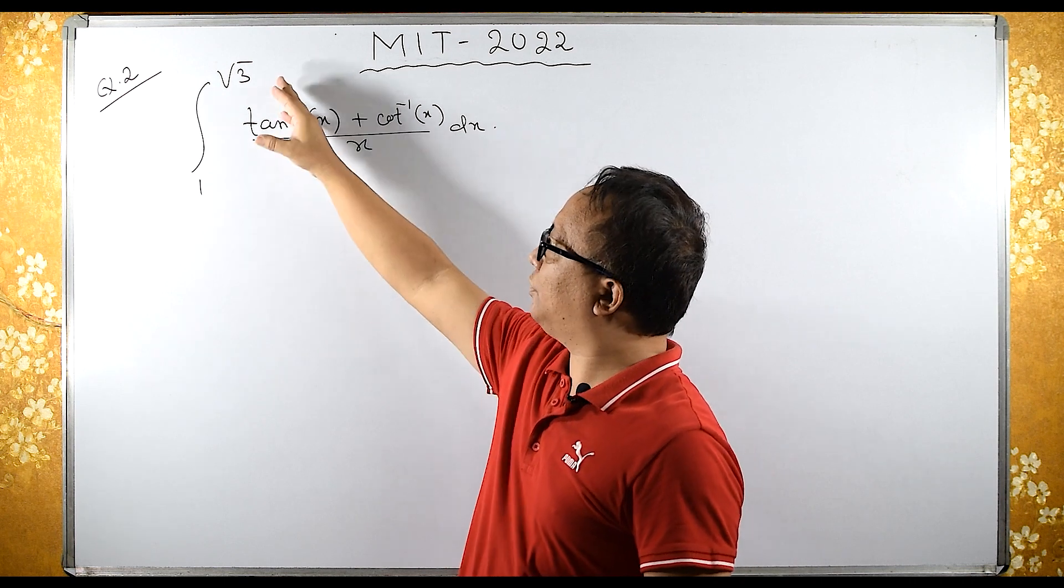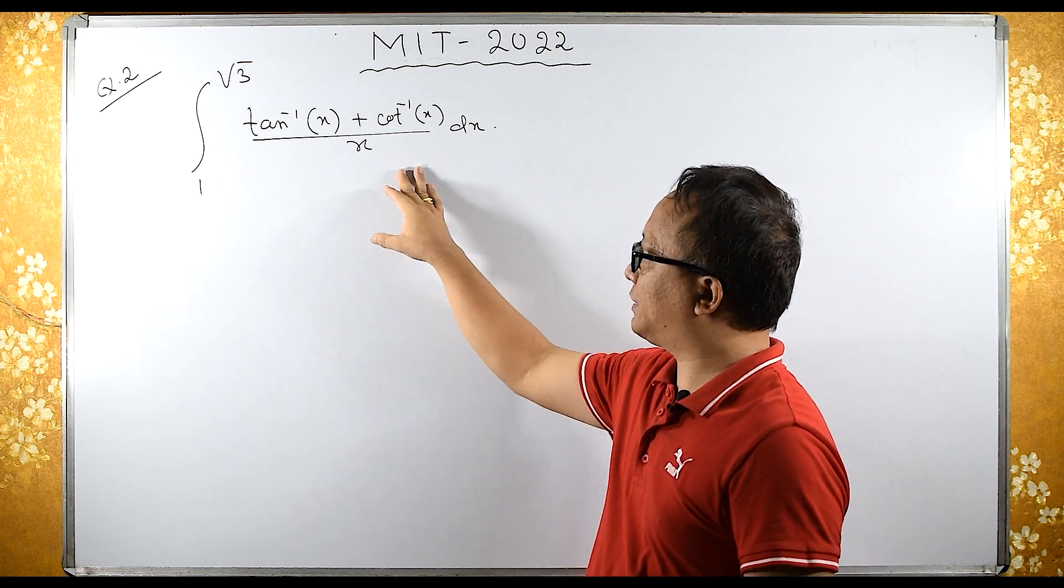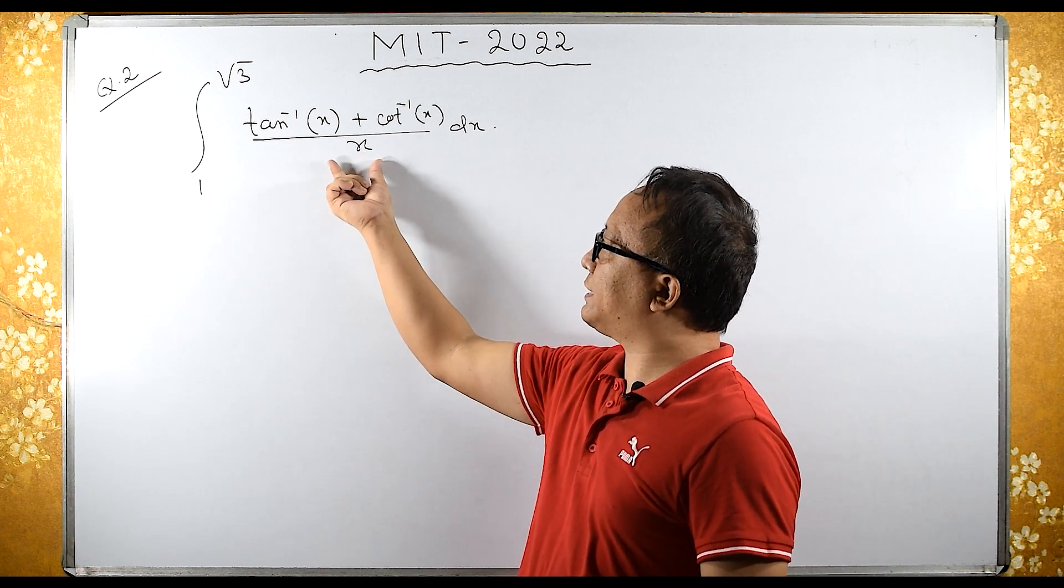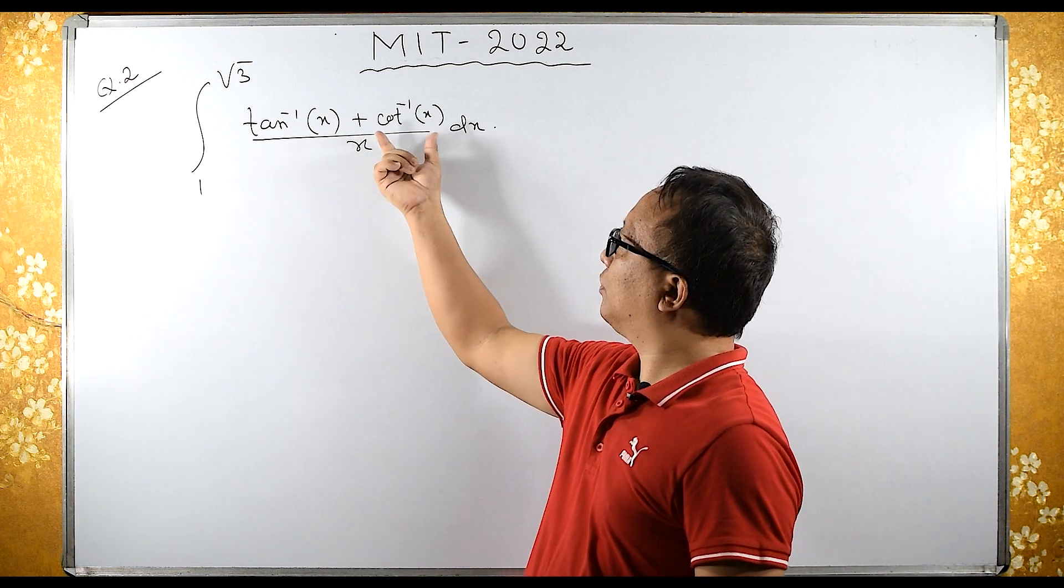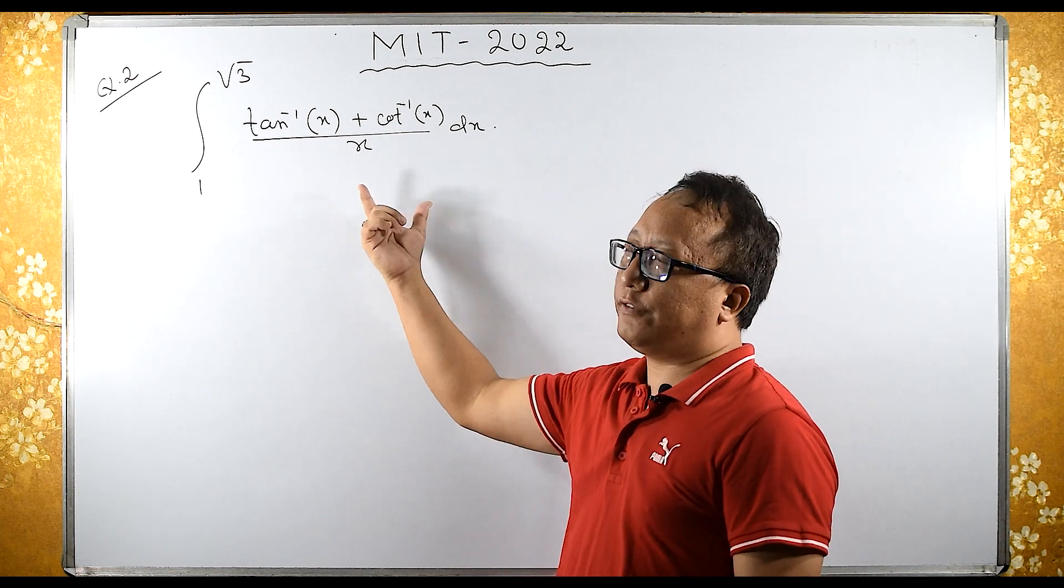The integration is from 1 to root 2 of tan inverse x plus cot inverse x upon x. If I distribute this x as tan inverse x upon x and cot inverse x upon x and integrate separately, then it will be very difficult.